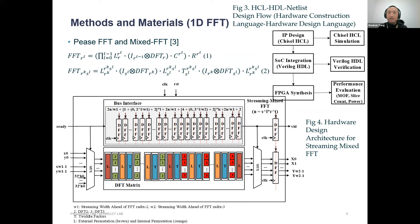The design flow is shown in Figure 3. First, we use Chisel HCL to design a generator for the one-dimensional FFT. Based on that, we make it an IP and instantiate the one-dimensional design into two-dimensional, and finally three-dimensional designs using Verilog HDL. The final step is evaluation: we use FPGA synthesis to evaluate performance in terms of maximum operational frequency, chip area, and power consumption. Chisel HCL is a hardware construction language created and maintained by Berkeley.